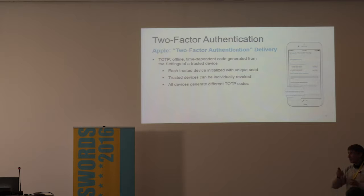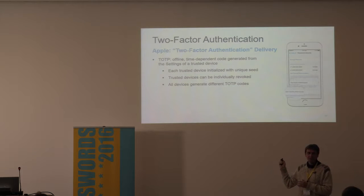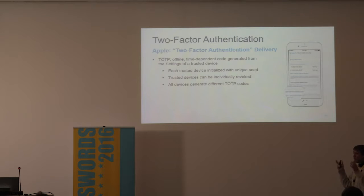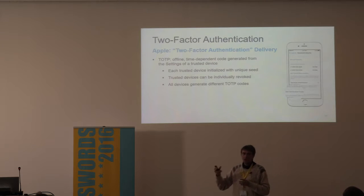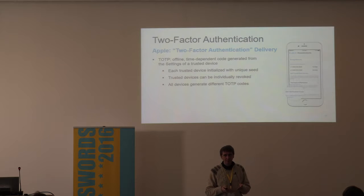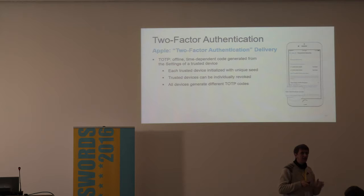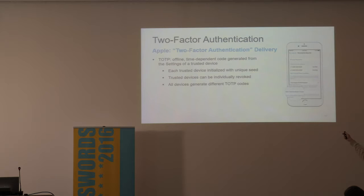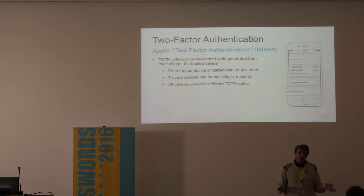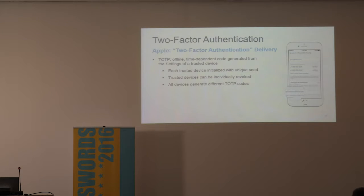This is very important because it's not the case with Google or Microsoft. Apple keeps it within their ecosystem — you cannot install an authenticator app on an Android device and use it to generate codes. You have to use your iPhone. Even offline, you go to iPhone Settings → Passwords & Security → Get Verification Code, and you get the same six-digit TOTP code. You can only use your iPhone, iPad, iPod touch, or a Mac OS system.